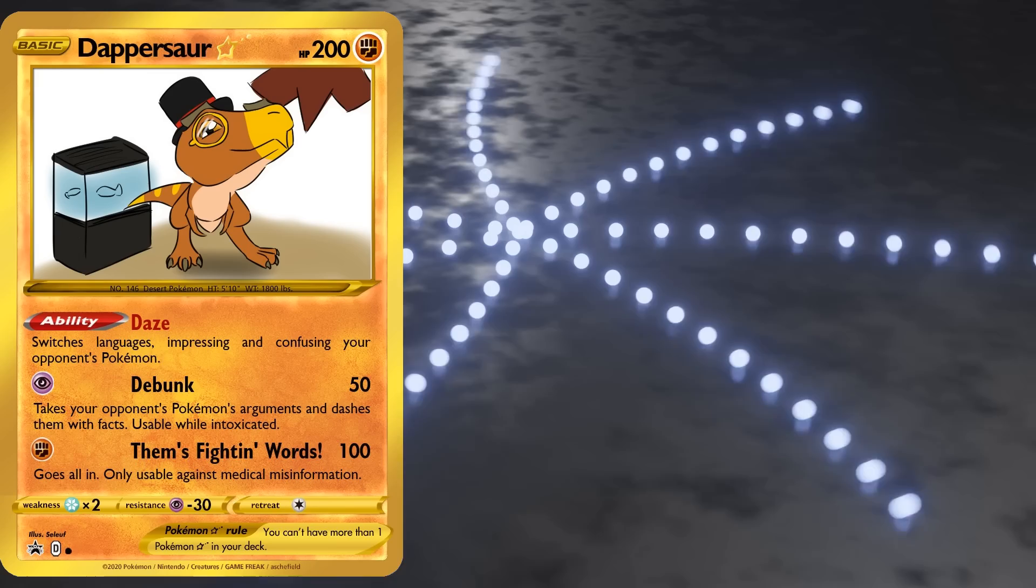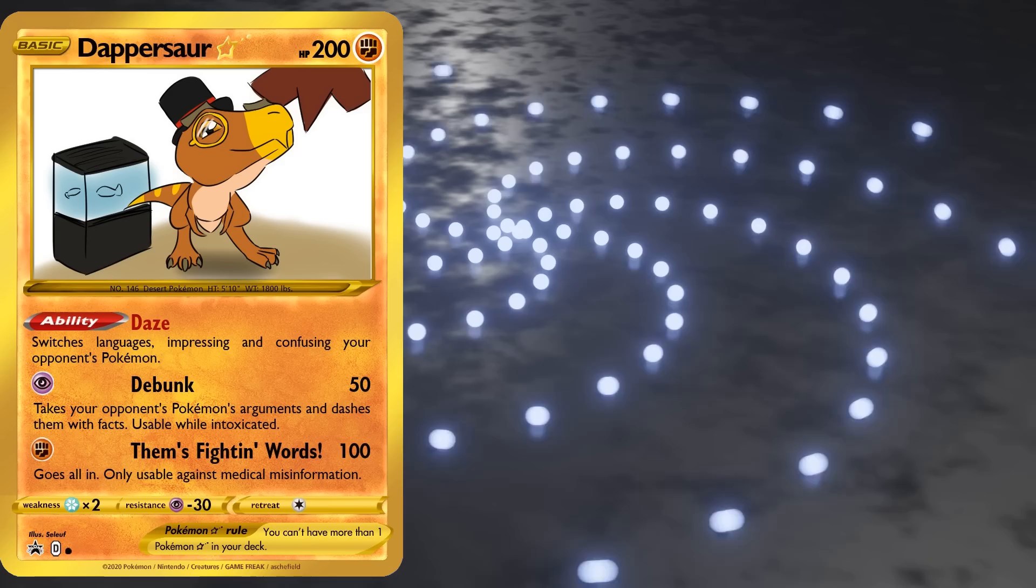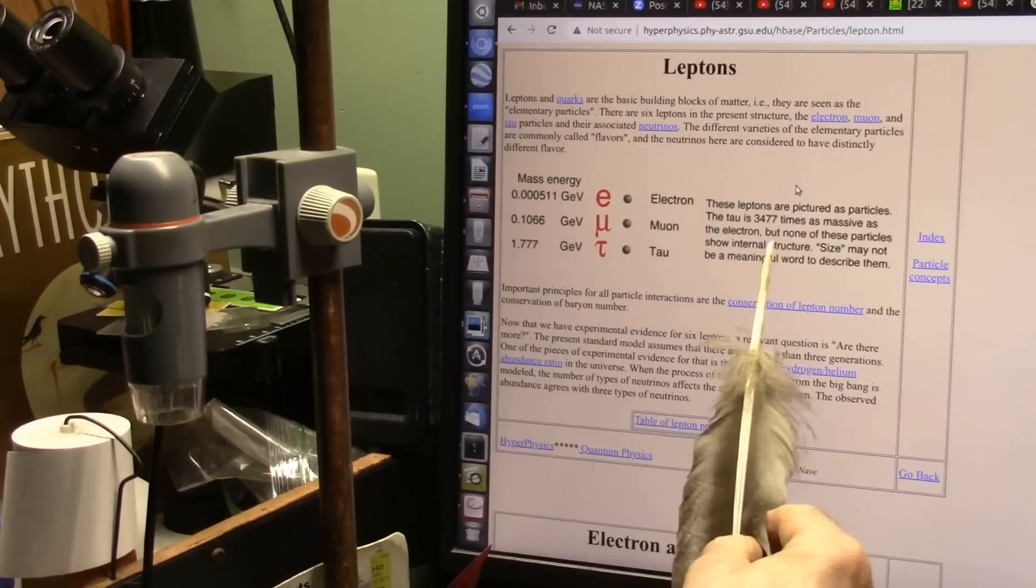It might be possible. Yeah, it might be possible that the insanely precise calculations and measurements, that I can guarantee Roger does not understand, might actually have found values for the properties of leptons. I guess that's the thing that could have happened. It's not impossible.